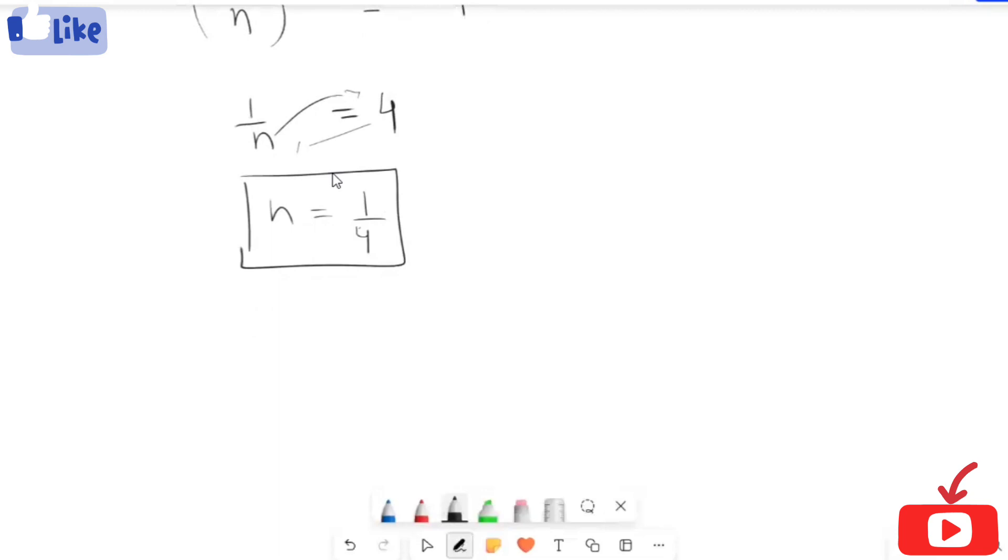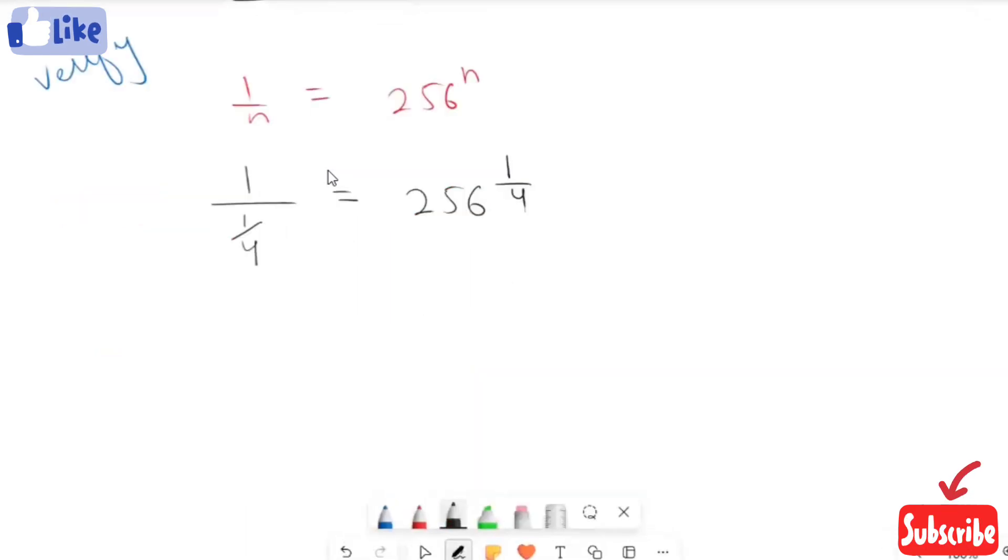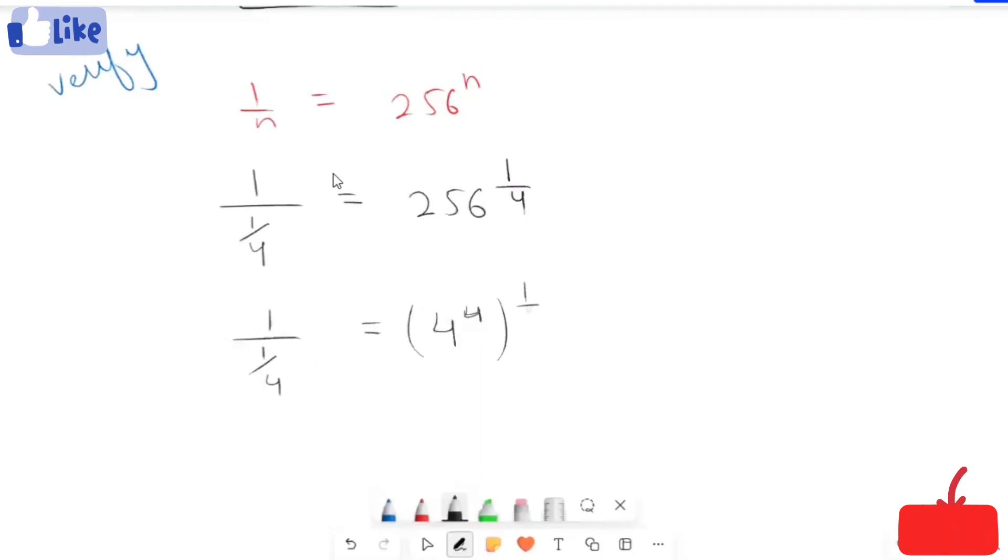Now I'm going to verify our n value. Starting with 1 over n equals 256 raised to power n, I'm going to plug in n equals 1 over 4. So 1 over 1/4 equals 256 to the power 1/4. Again, I'm going to change 256 to the form of a power, that is 4 raised to power 4.